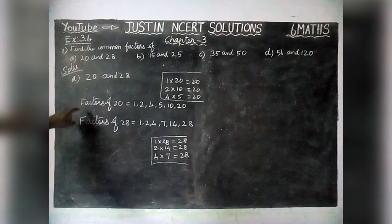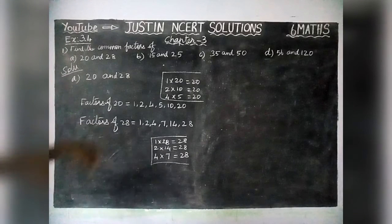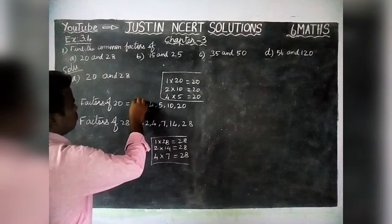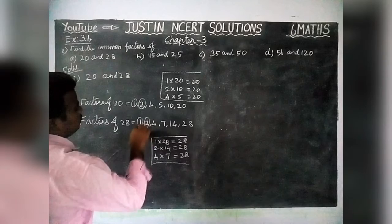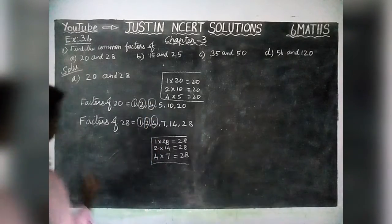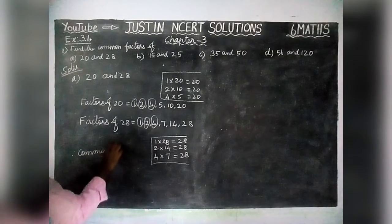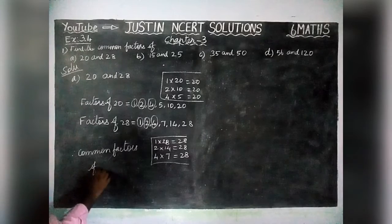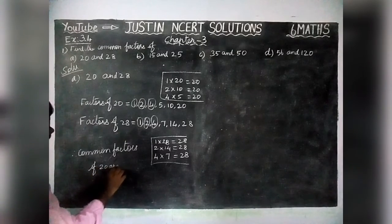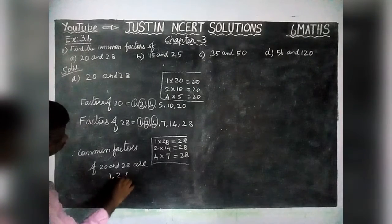Now we have found all the factors of 20 and all the factors of 28. In these factors, we have to find what are the common factors and mark them. 1 is a common factor, 2 is a common factor, 4 is a common factor. Therefore, the common factors of 20 and 28 are 1, 2 and 4.